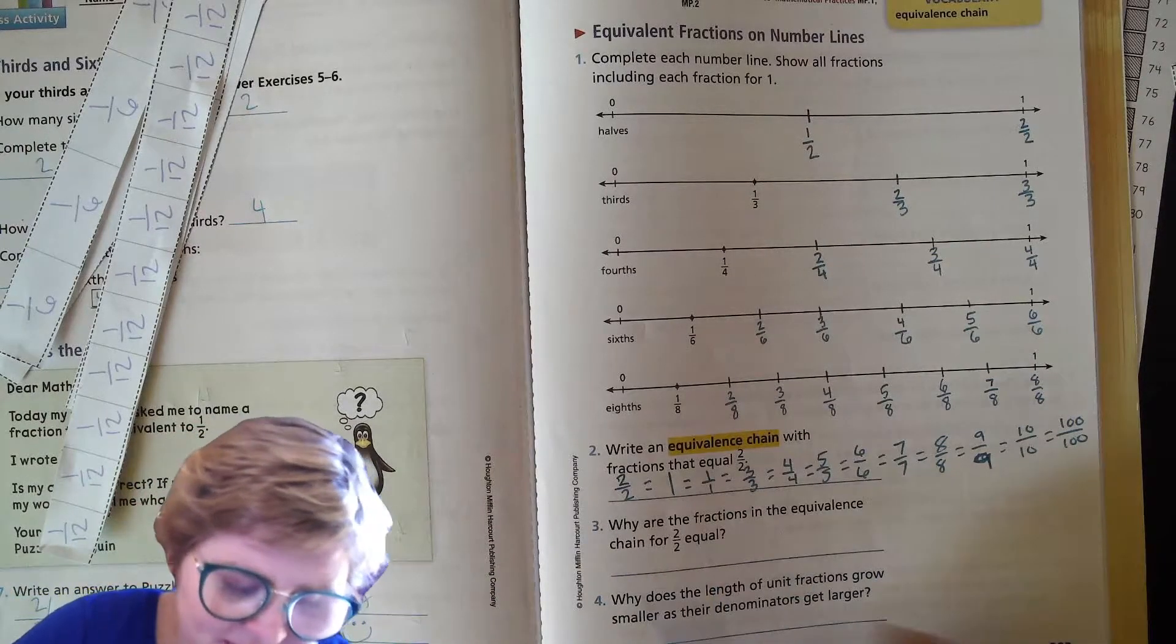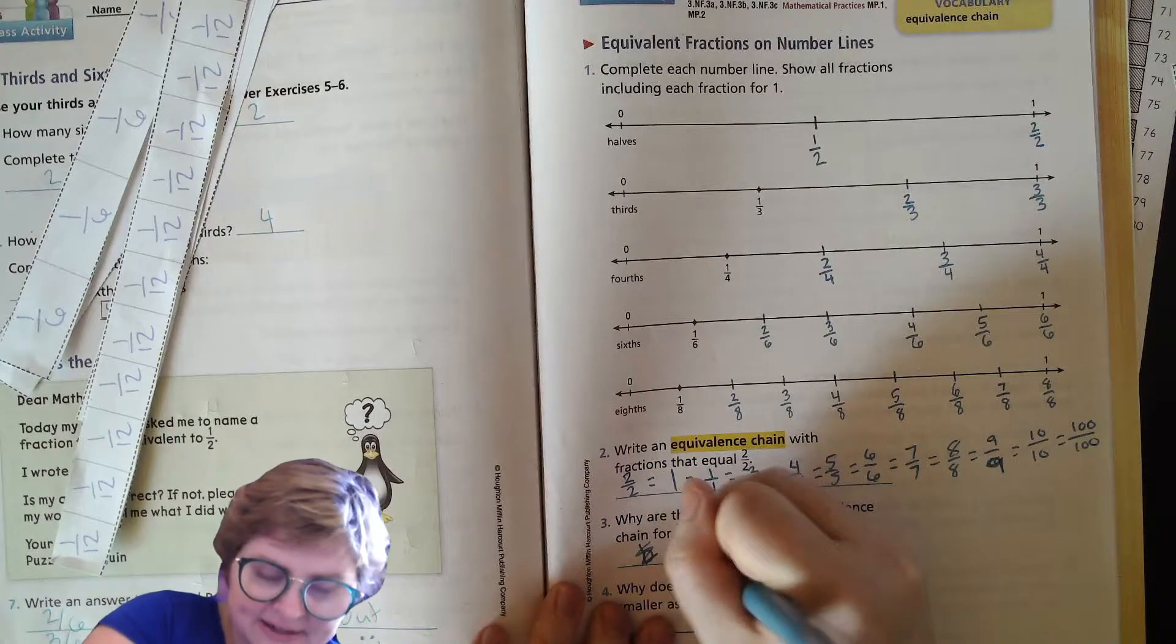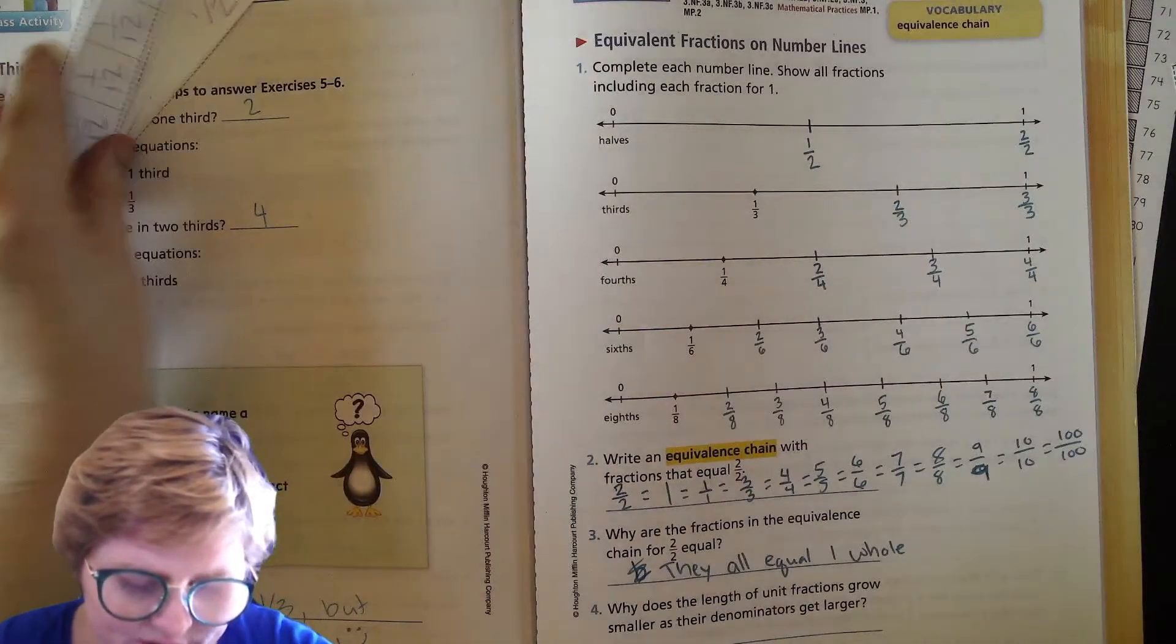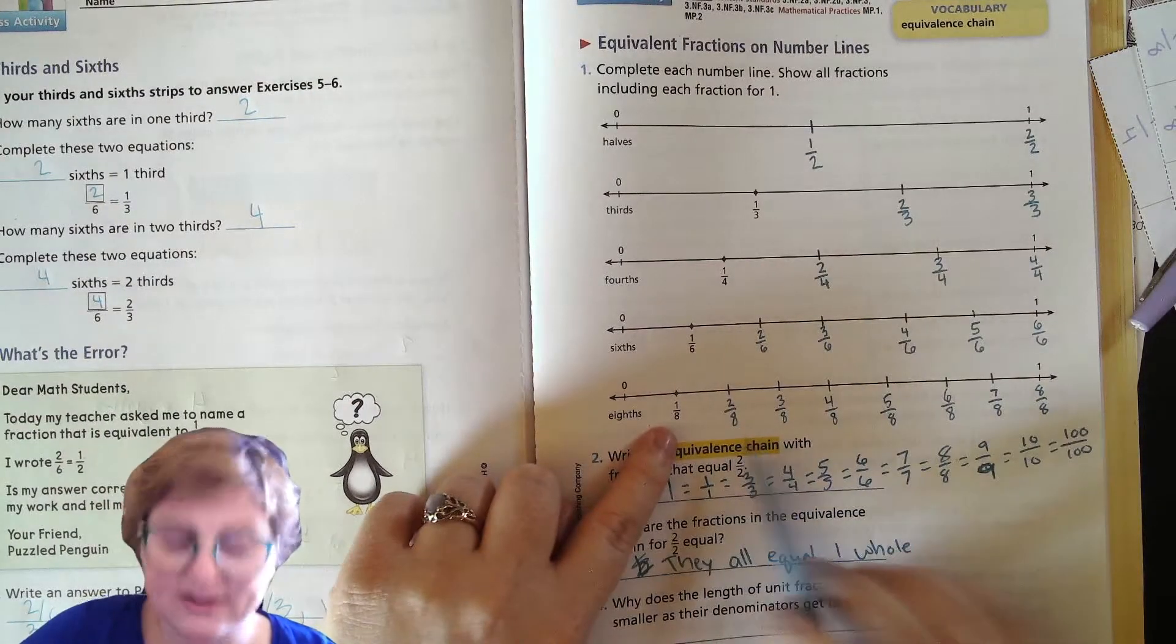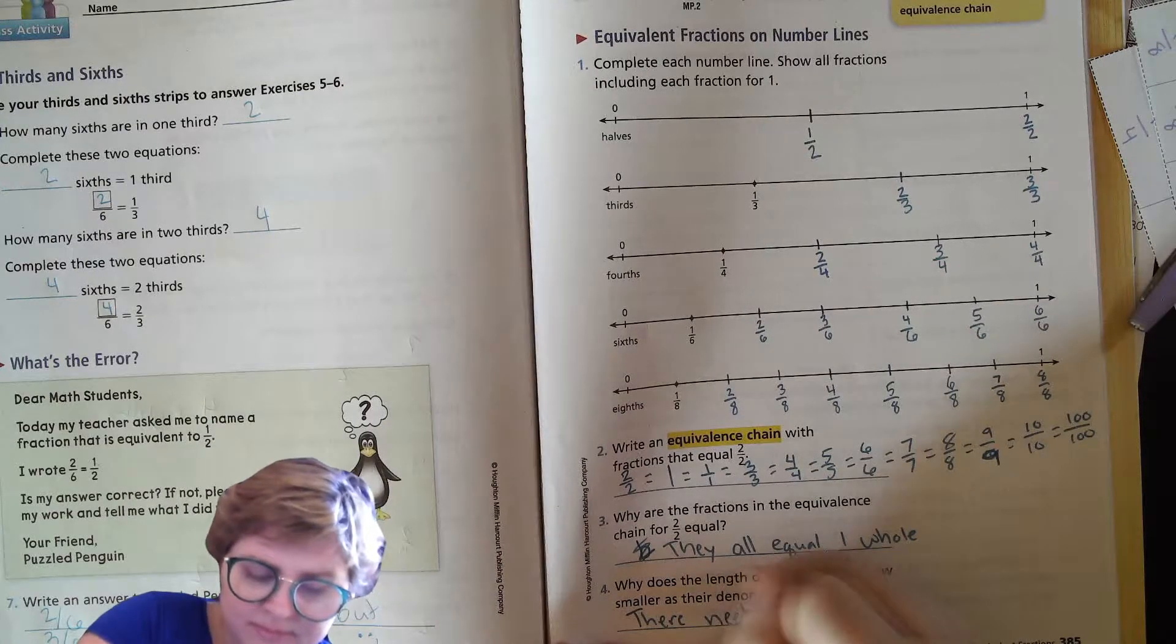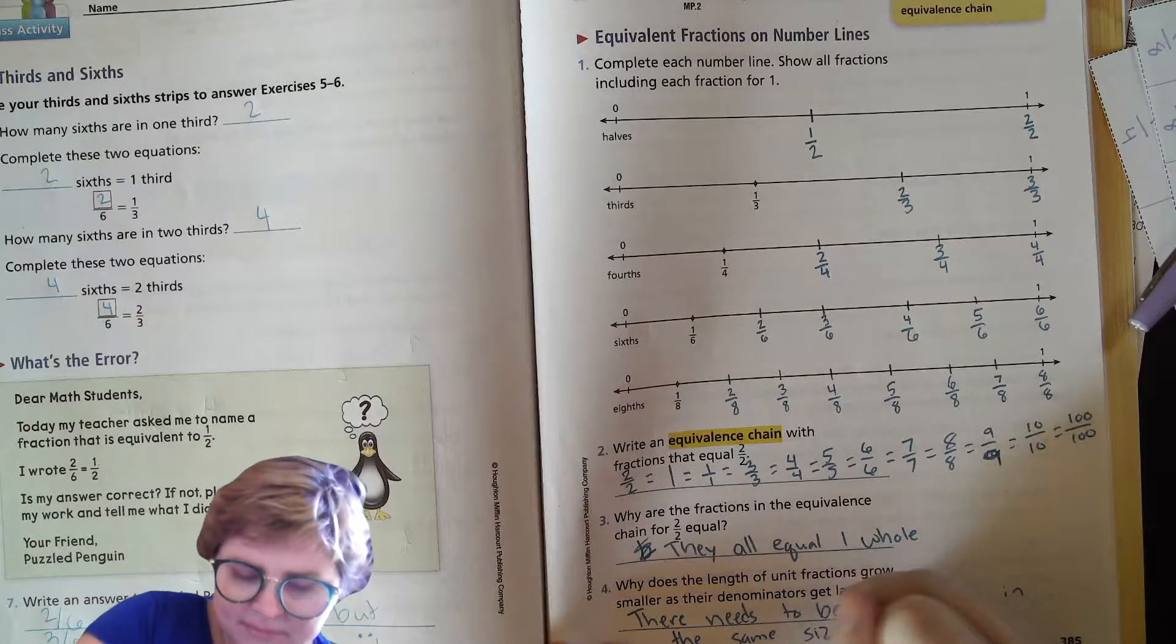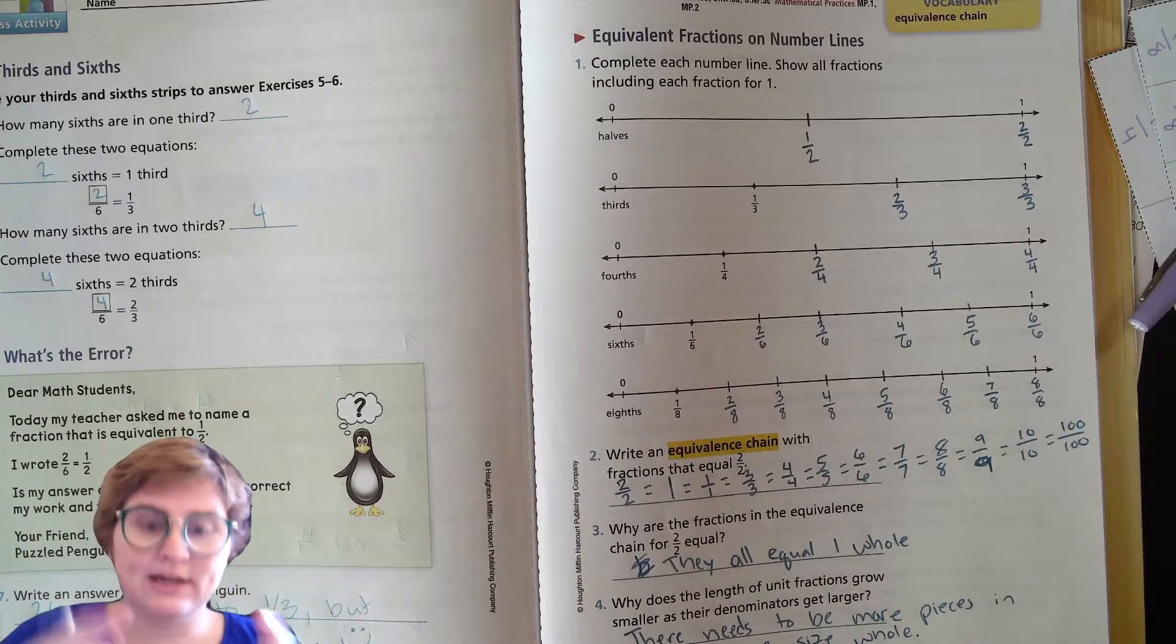Why are the fractions in the equivalence chain equal? Because they all equal one whole. Why does the length of unit fractions grow smaller as the denominations or the numbers get larger? Because there has to be more pieces in the same size whole, right?